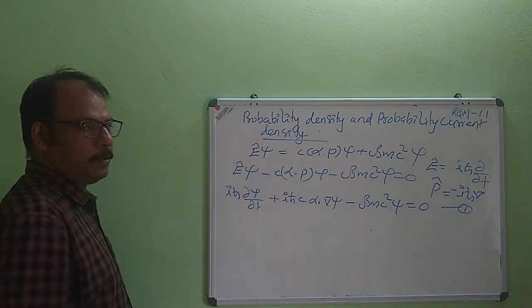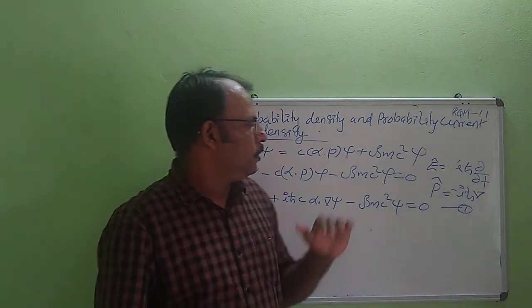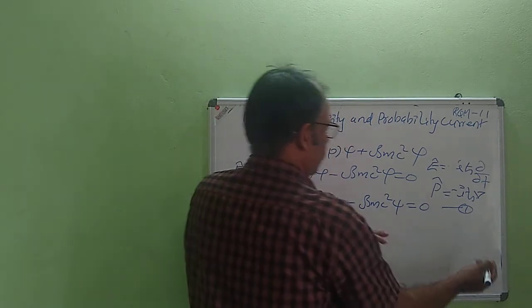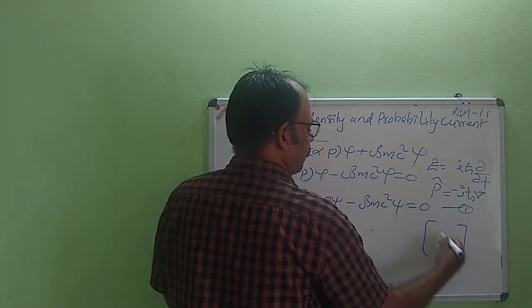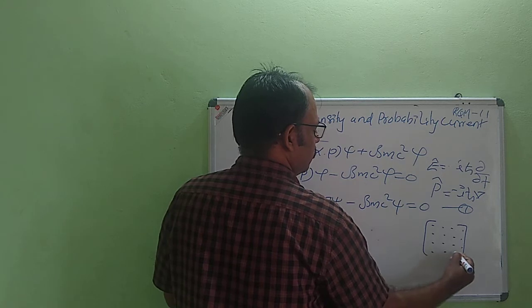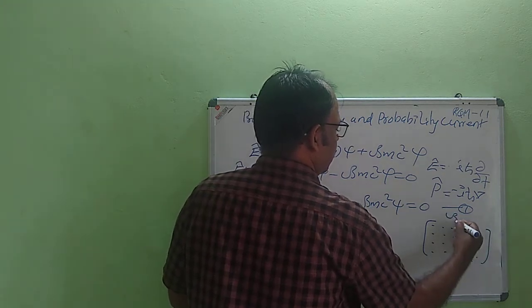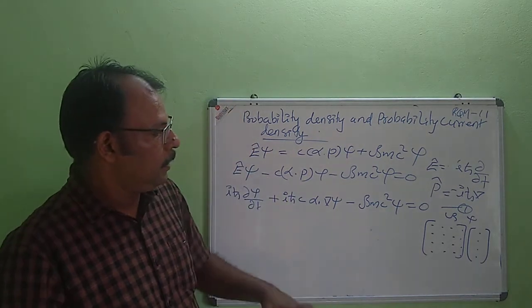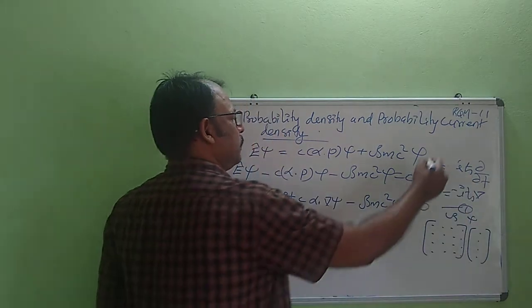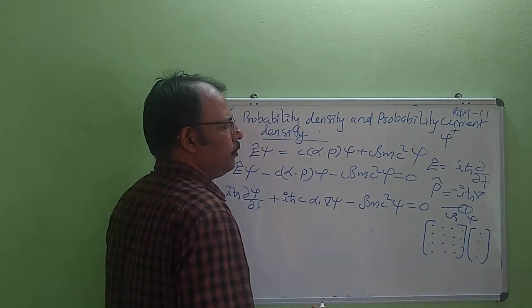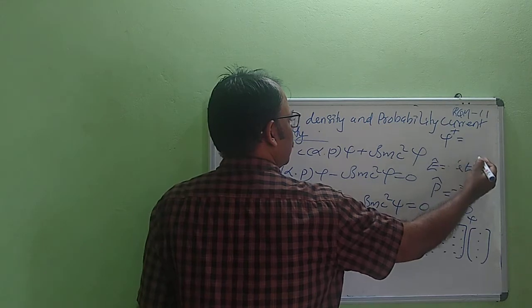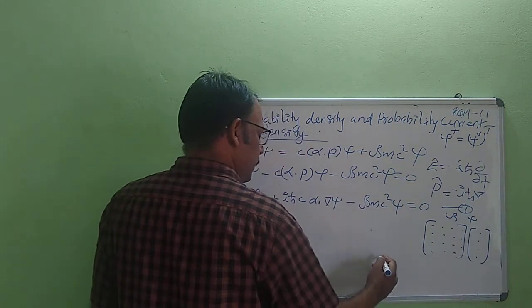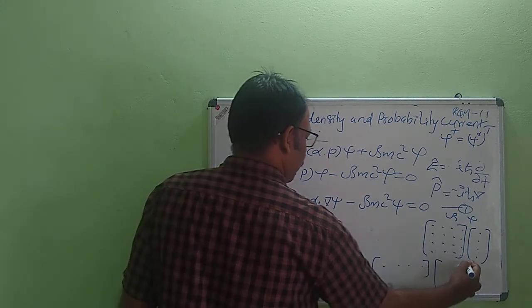Now take the conjugate of this equation. When we take the conjugate, psi has 4 components and is represented by a column vector. If you multiply with some matrices, beta being a 4 by 4 matrix, when you take the conjugate in matrix form, it should be the dagger — you should take the Hermitian adjoint, psi dagger. Psi dagger means you are taking the conjugate and transposing the matrix. So if you want to multiply beta from the right, then this should be a row matrix instead of a column matrix.